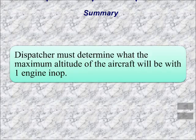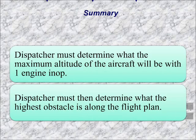In summary, the dispatcher or someone has to determine what the maximum altitude of the airplane is going to be with one engine failed, and make sure that whatever obstacle is along that flight path is not going to be in the way. Oftentimes this is totally handled by the flight planning software and really doesn't require a lot of intervention from the dispatcher, typically.